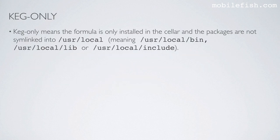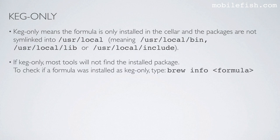Now I will explain the term keg-only. Keg-only means the formula is only installed in a cellar and the packages are not symlinked into /usr/local — meaning these three directories. So in these three directories, there are no symlinks created to the installed package. If keg-only, most tools will not find the installed package. To check if a formula was installed as keg-only, type this command.